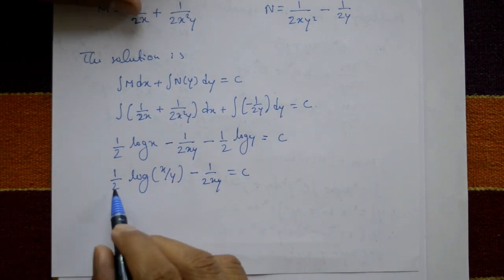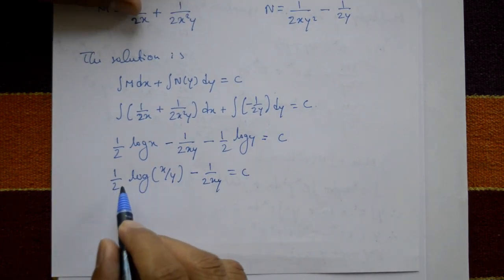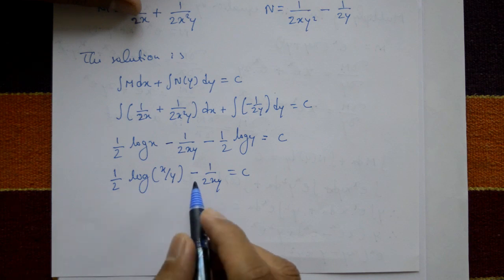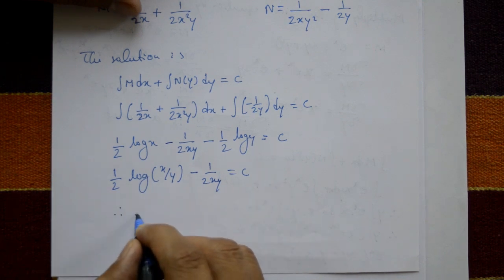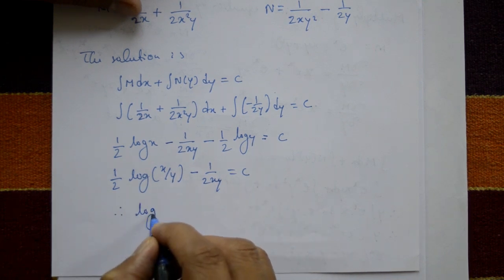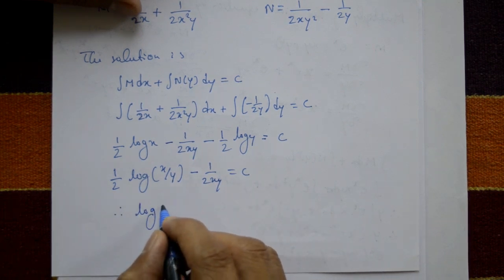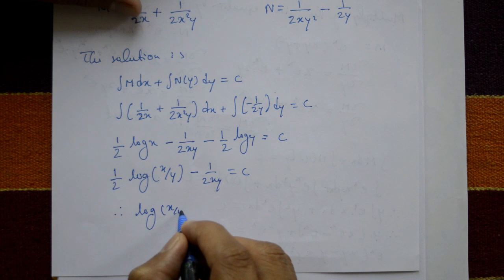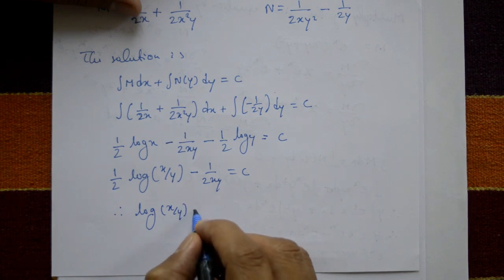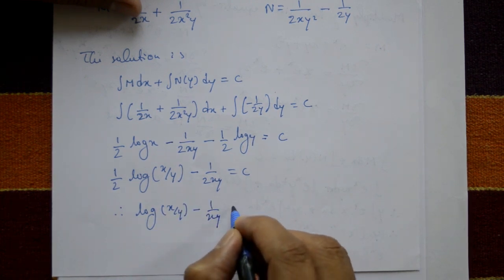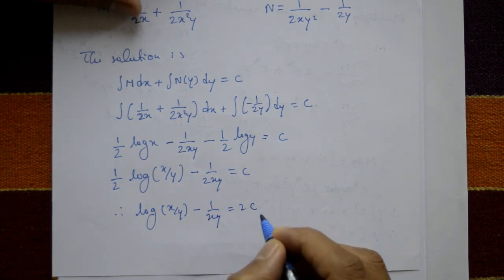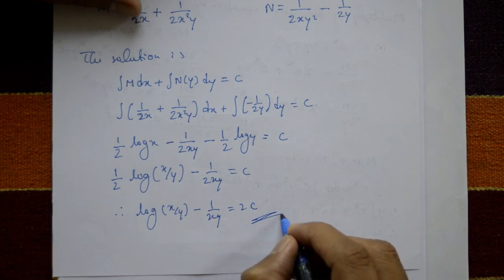Now 2 is common in these two terms. Cross-multiplying, the required solution is: log(x/y) minus 1/(xy) equals 2C.